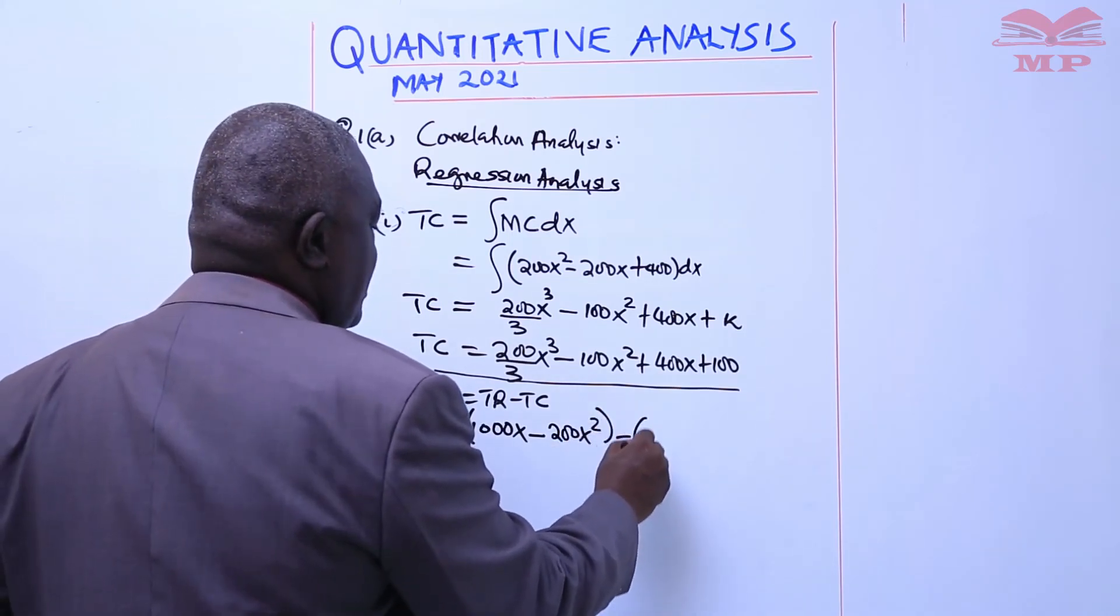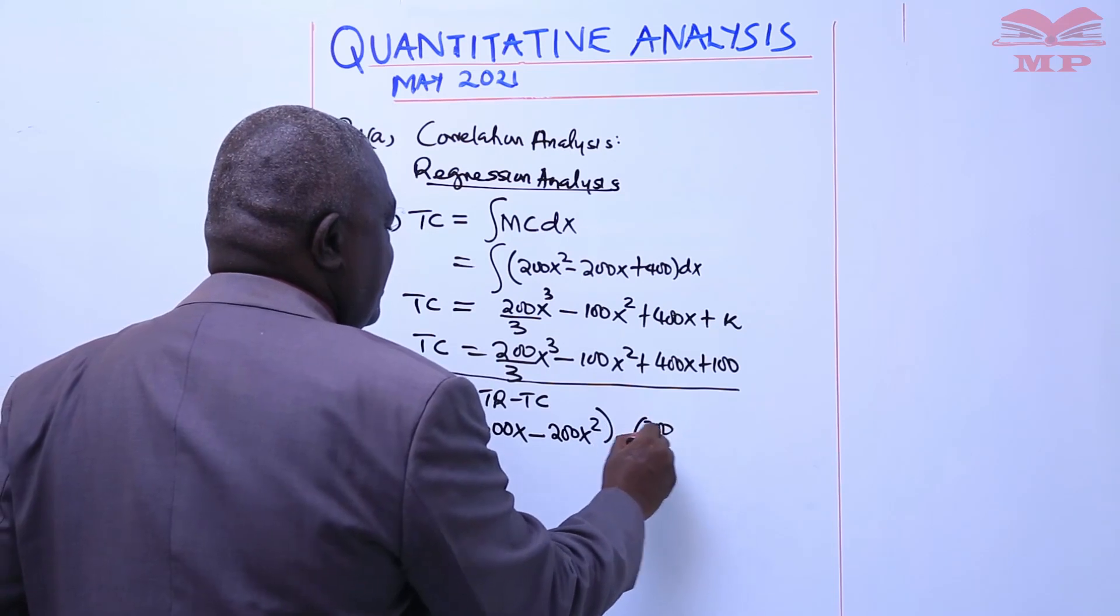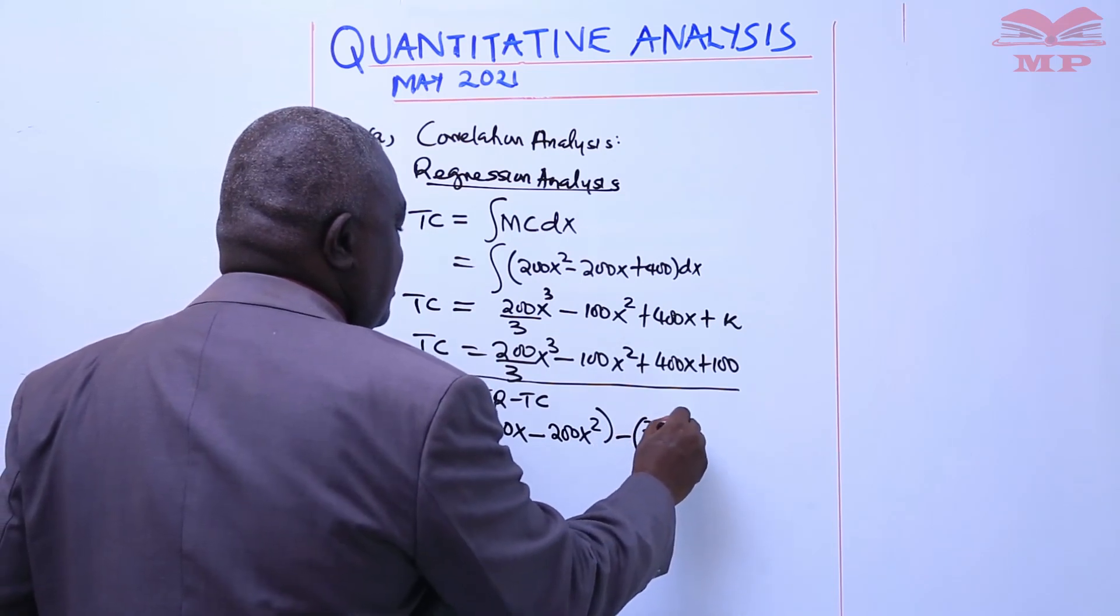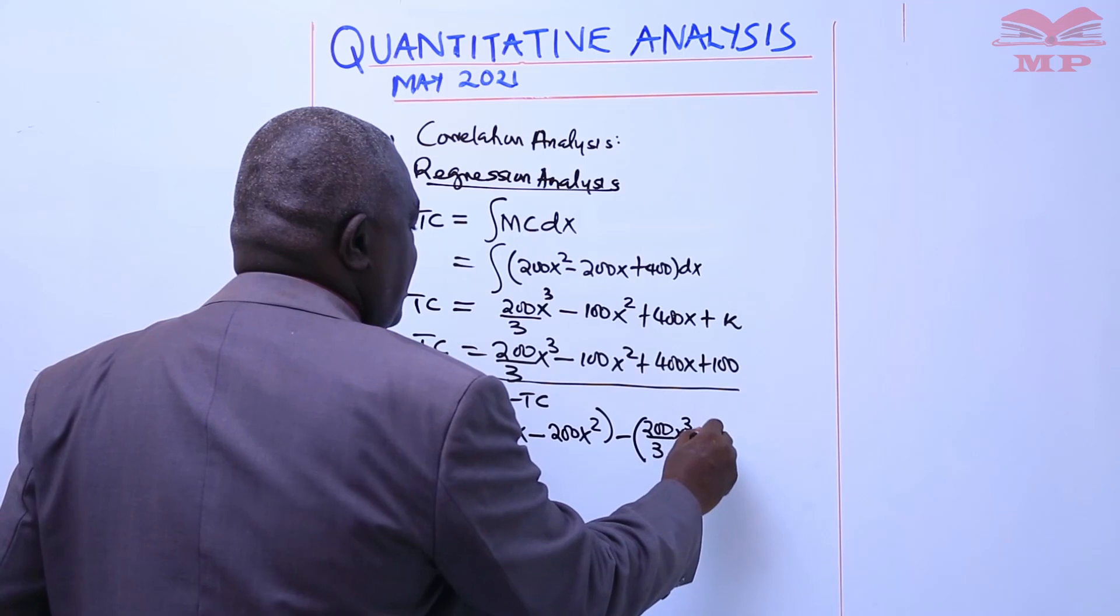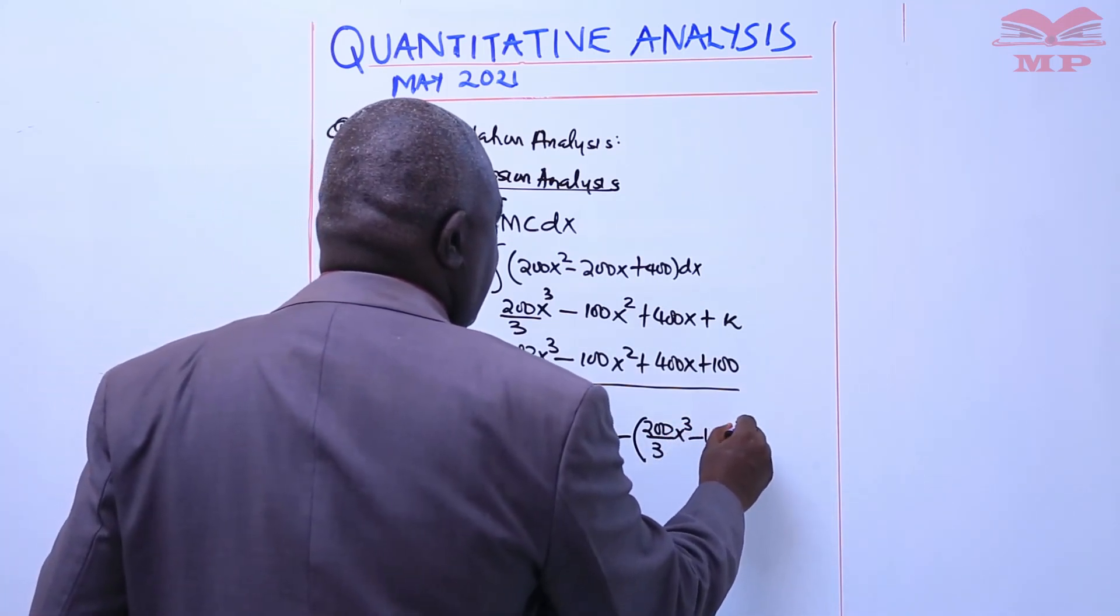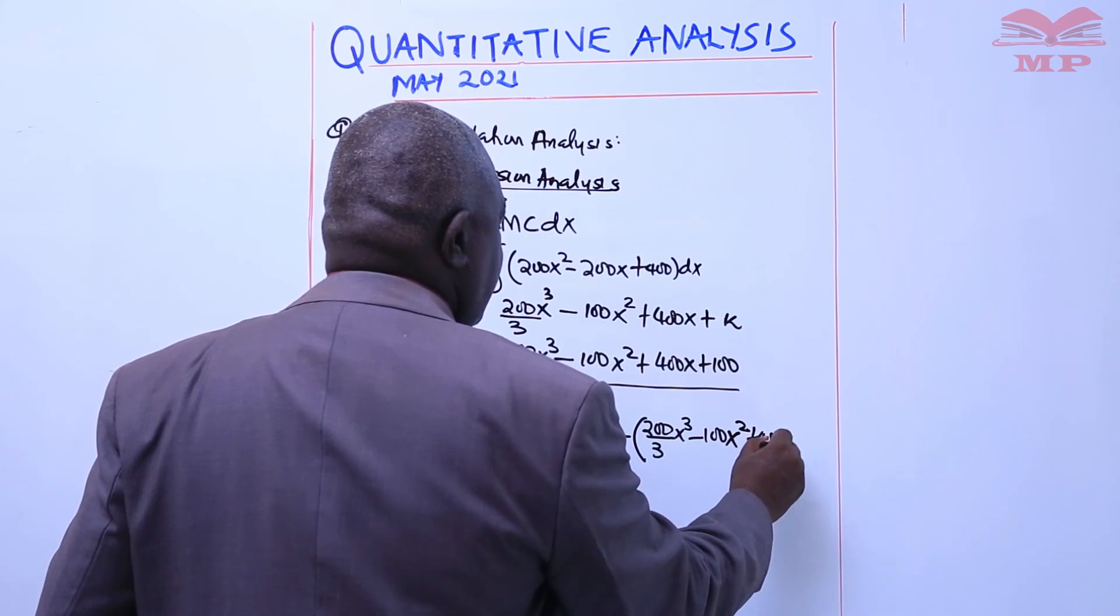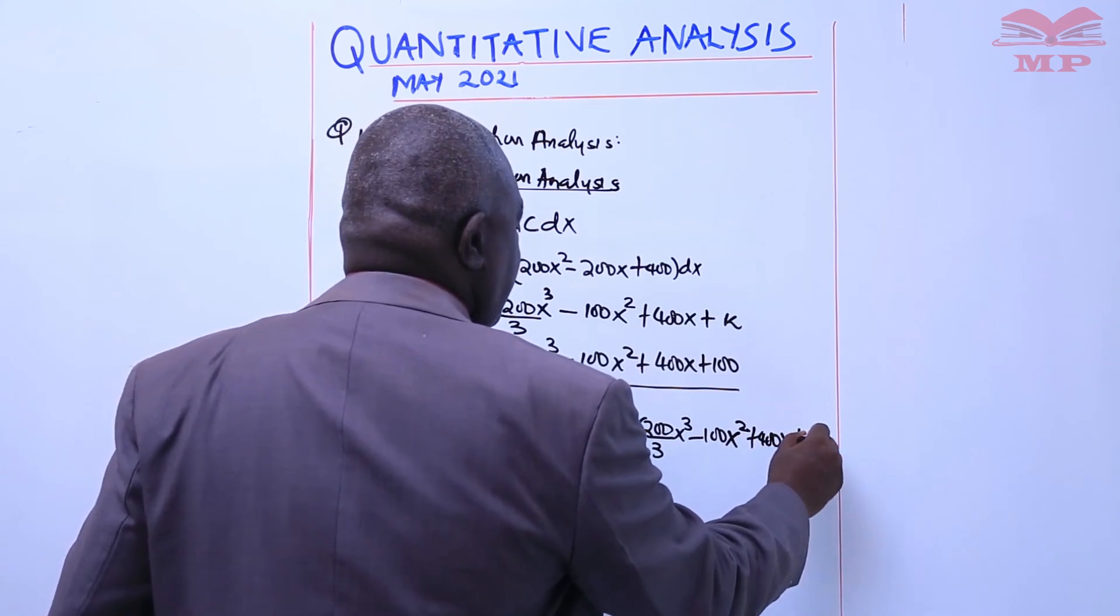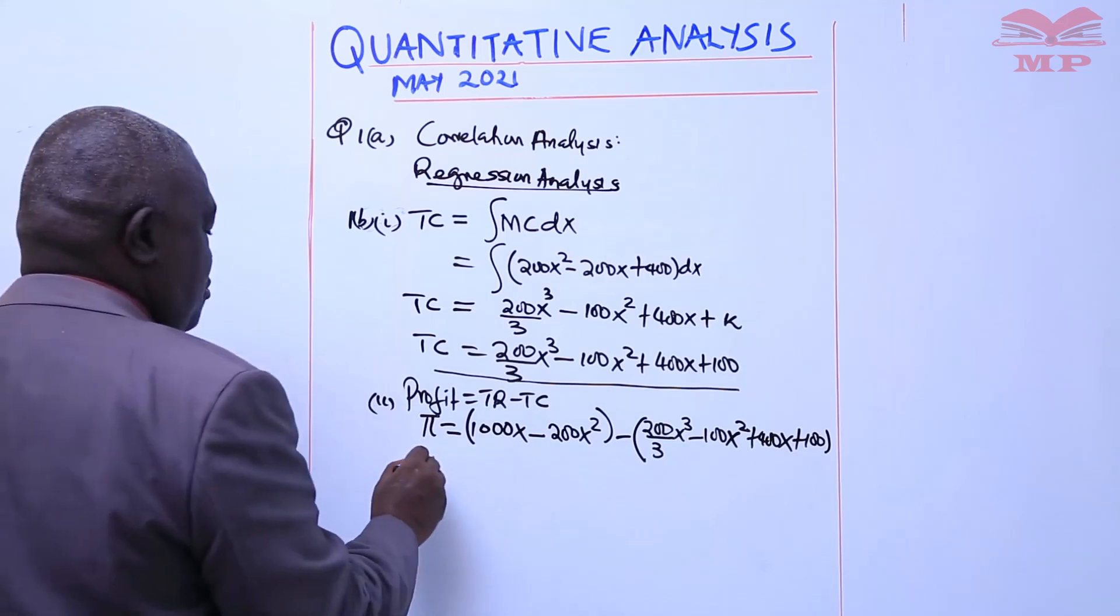Minus total cost: 200/3 X³ + 100X² + 400X + 100. So the profit function becomes